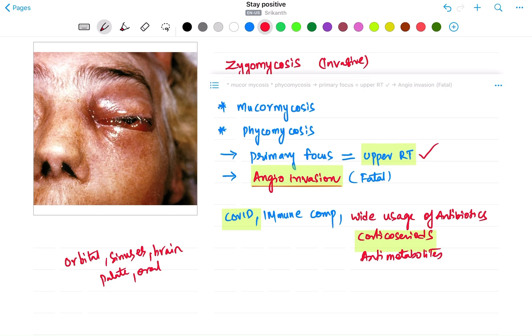That is called angioinvasion. Through the blood it's going to reach the different parts of the body. So it starts from the respiratory tract and through the blood it's going to reach or get spread to the different parts of the body.